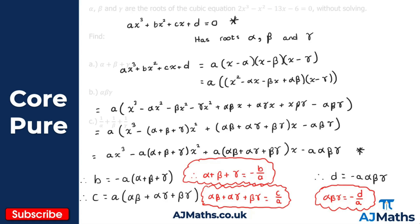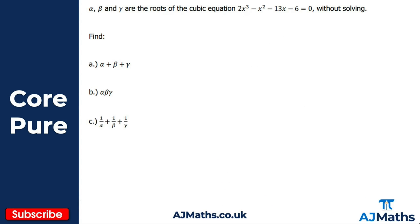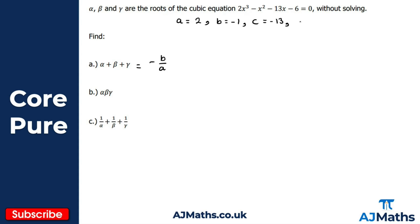Let's take a look at one practice question. We've got alpha, beta, and gamma which are the roots of this cubic equation. Without solving, I want to find three things. The coefficients are: a is 2 (coefficient of x cubed), b is minus 1 (coefficient of x squared), c is minus 13 (coefficient of x), and d is minus 6 (the constant).